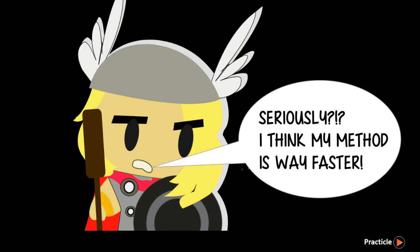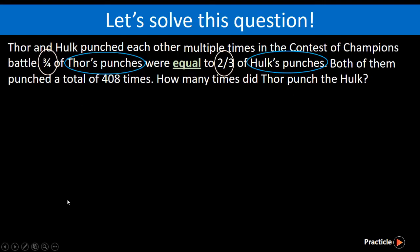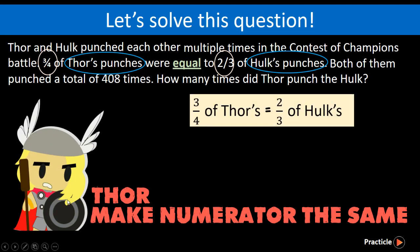But wait — let's take a look at Thor's method, which involves making the numerator the same. So, 3 quarters of Thor's punches equals 2 thirds of Hork's punches. In order to make the numerator the same, we find the lowest common multiple between 3 and 2, which is 6.